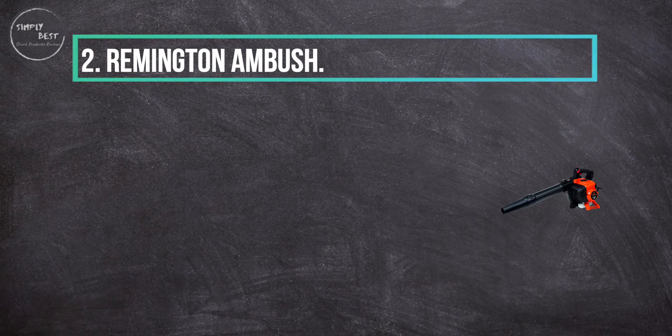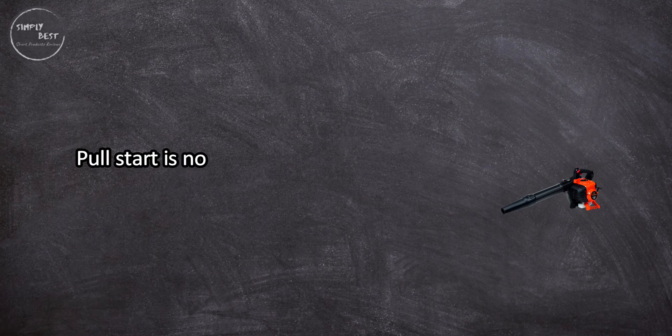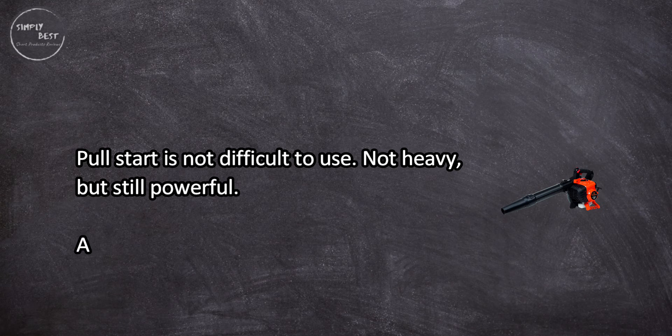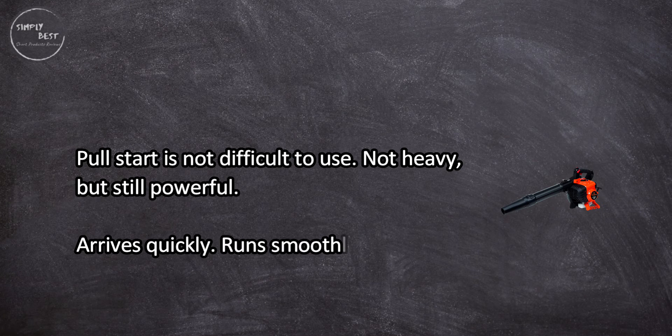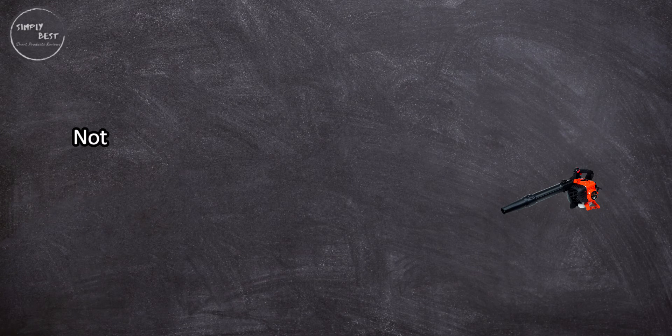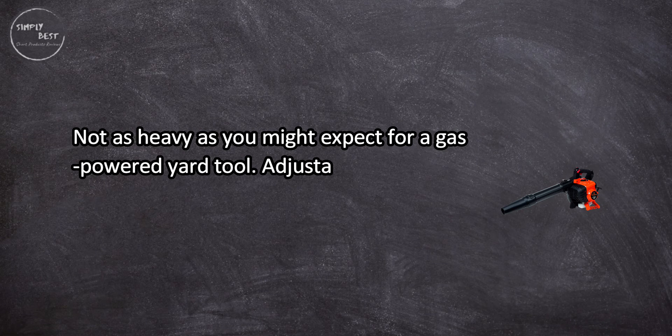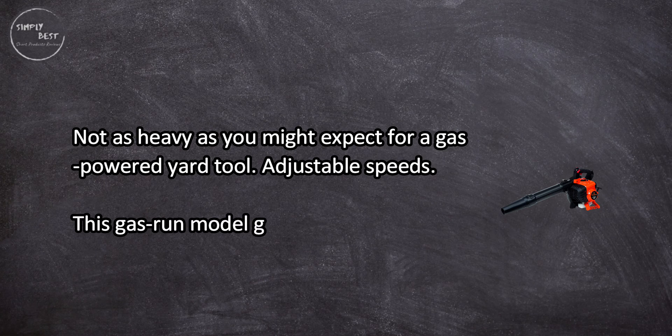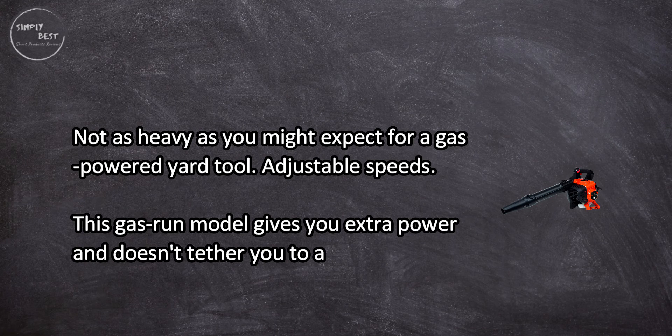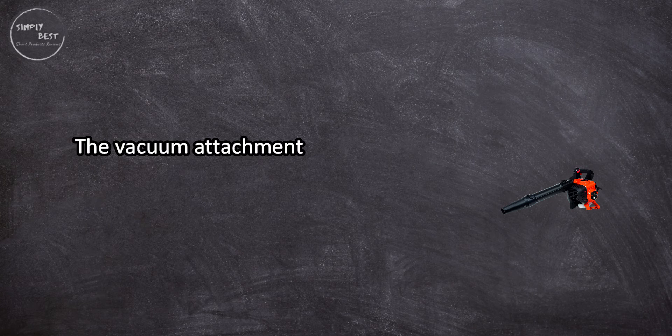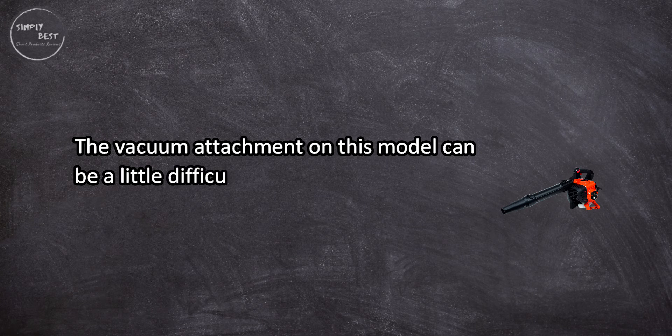Remington Ambush. Pull start is not difficult to use, not heavy but still powerful, arrives quickly, runs smoothly. Not as heavy as you might expect for a gas-powered yard tool. Adjustable speeds. This gas-run model gives you extra power and doesn't tether you to an extension cord. The vacuum attachment on this model can be a little difficult to attach.